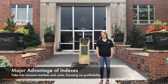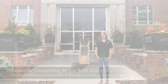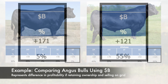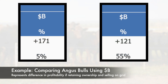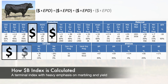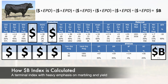Most economic selection indexes are reported as a dollar value, allowing you to directly compare bulls based on their profitability. For example, let's say you're using the American Angus Association's Dollar B, or beef value index, to compare two Angus bulls. The Dollar B index is designed to represent the difference in post-weaning profitability of each bull's calves if all calves are retained through finishing and sold on a grid. This is a terminal index made up of only EPDs for terminal traits, with heavy emphasis on marbling and yield to help producers add value and capture premiums. Each trait is weighted by its economic importance and then added up to become the Dollar B index.